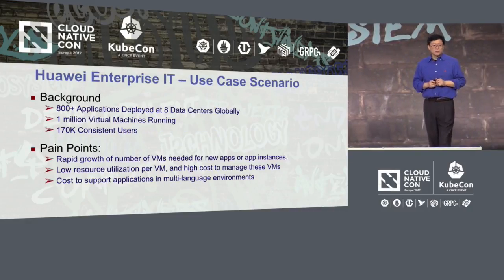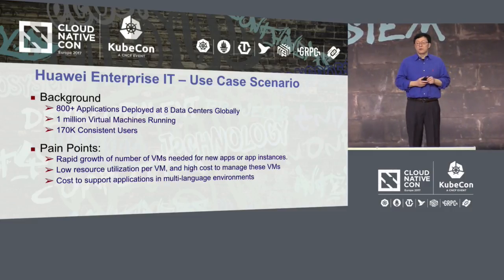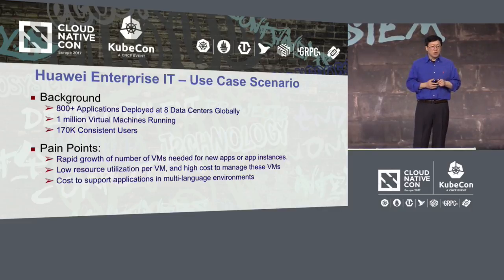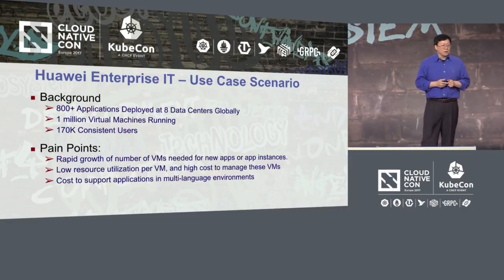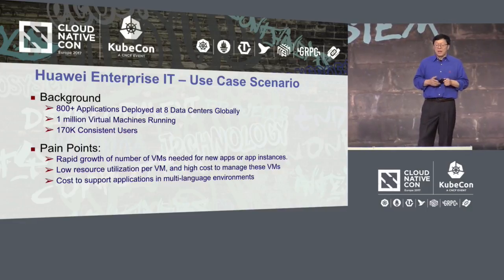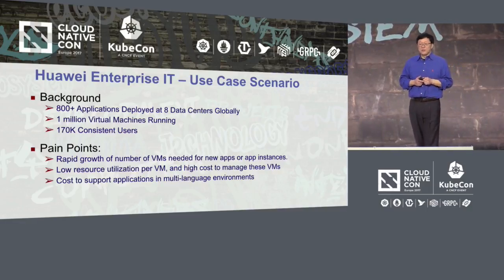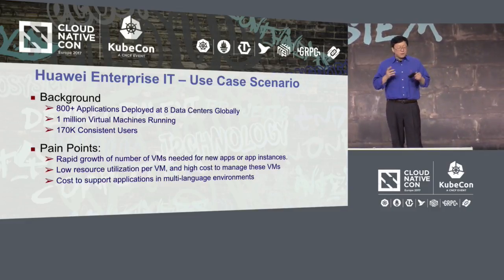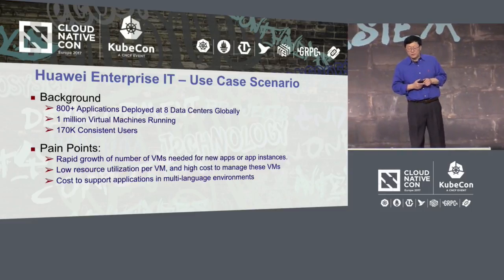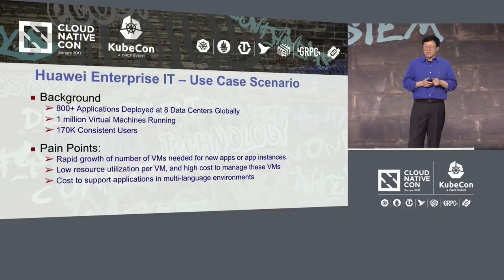Today I want to share some of the use case scenarios we have. One of the scenarios is our own internal IT. I want to share our experience and the best practices we learned during the process of moving to cloud native architecture. Huawei IT has more than 800 applications deployed around the globe across eight data centers, running close to one million virtual machines with 170,000 concurrent users.